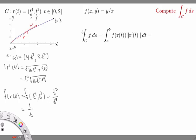The bounds for our parameterization are t equals 0 to t equals 2. Now we're ready to compute this single variable integral. We have the integral from 0 to 2 of f of r of t, which is 1 over t, times the magnitude of r prime of t, which is t squared times the square root of 16 t squared plus 9.